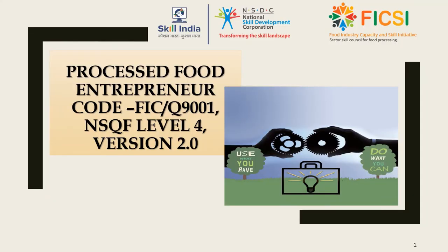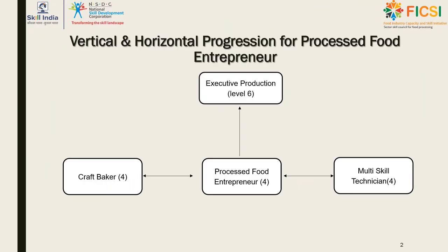The processed food entrepreneur role has QP code FIC Q9001, NSQF level 4, version 2. A processed food entrepreneur can obtain training from craft baker and multi-skilled technician at the same NSQF level. As horizontal progression increases, a person can go into various sub-sectors to work either in large-scale or small-scale industries.